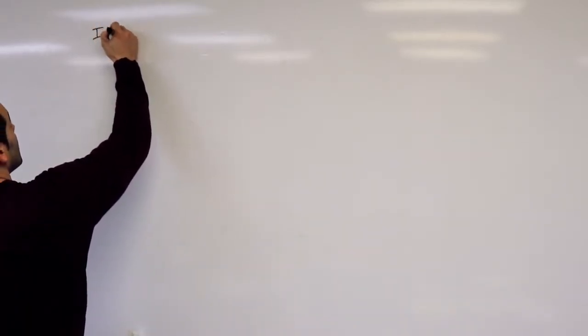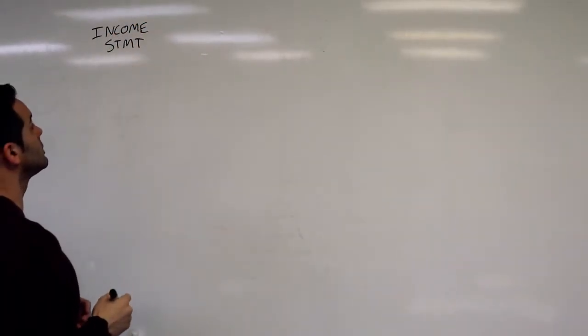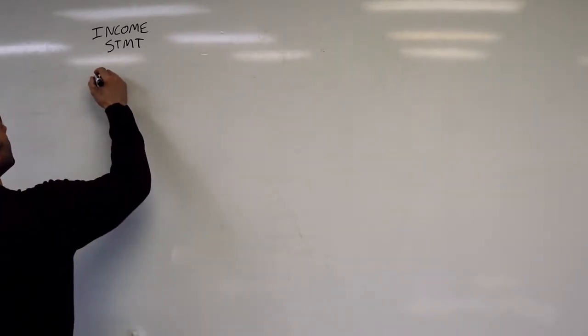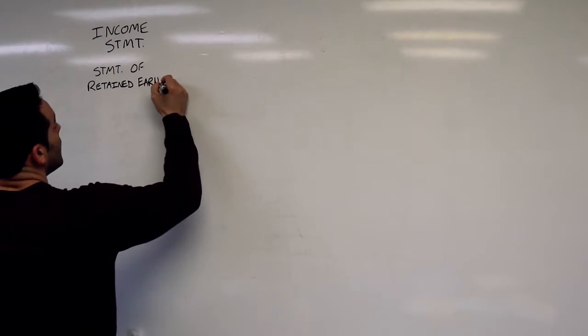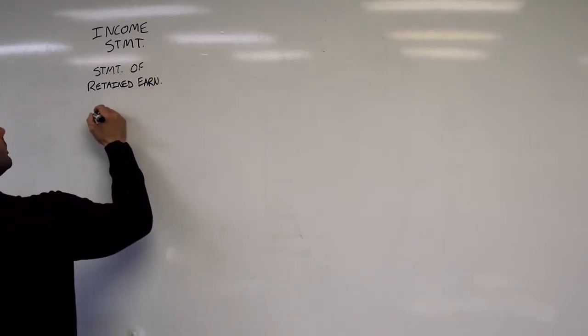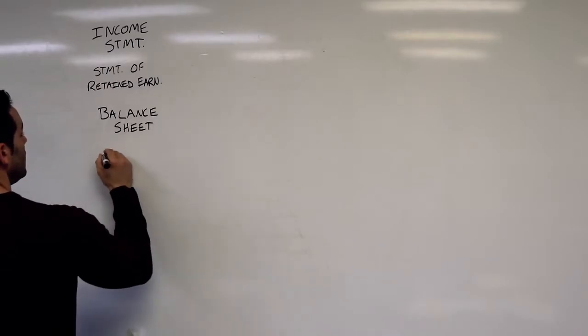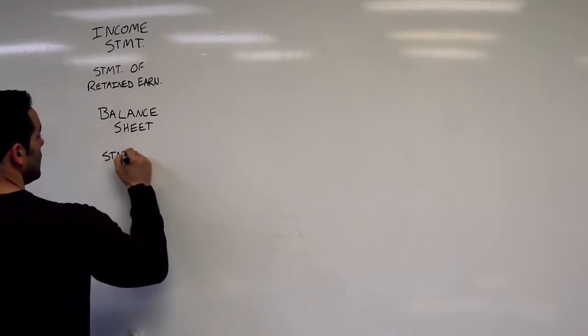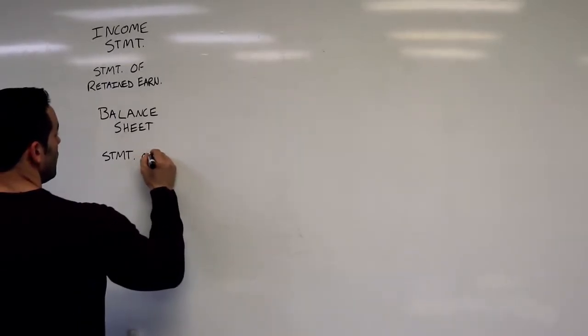The first financial statement that we're going to talk about is the income statement. The next is the statement of retained earnings. The next is the balance sheet, and finally the statement of cash flows.